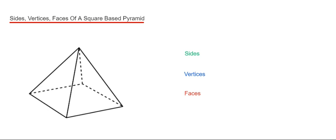These are the lines which you can see in the shape. Let's count how many we've got: one, two, three, four, five, six, seven, eight. So we've got eight sides.